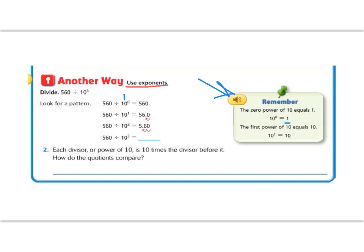Now we're going to divide 560 divided by 10 to the power of 1. 10 to the power of 1 means that it has 1 zero. So that is the number 10. If we're dividing by 10, our number is going to get smaller, and our decimal is going to move to the left, 1 place value. So now instead of 560, I have 56.0.